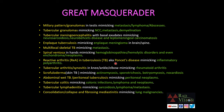Reactive arthritis in tuberculosis, also called Poncet's disease, can mimic inflammatory polyarthritis. Tubercular arthritis or synovitis in the knee and ankle can mimic rheumatoid arthritis. Scrofuloderma or skin TB can mimic fungal, actinomycosis, sporotrichosis, or bacterial infections. Abdominal wet TB or peritoneal tuberculosis can mimic peritoneal neoplasms. Tubercular colitis can mimic colon infections, lymphoma, or neoplasms. Tubercular lymphadenitis can mimic sarcoidosis or lymphoma metastasis. Consolidation, collapse, and fibrosing mediastinitis can mimic lung malignancies.